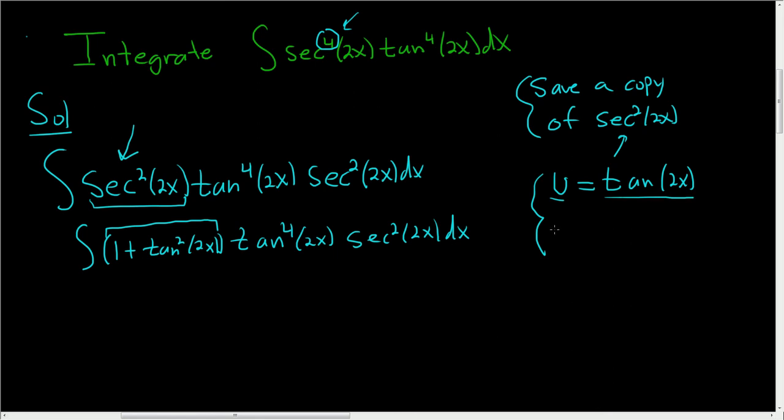So u is tangent 2x. The derivative of tangent is secant squared, so here we get secant squared 2x times the derivative of the inside function. We're using the chain rule here, so the derivative of 2x is 2dx. We don't have a 2 in our integral, so we'll divide everything by 2 here.